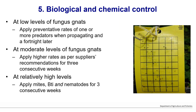At lower levels of fungus gnats with biological control, apply mites or Dalotia or both at propagation and a fortnight later to establish populations. At moderate levels, apply a higher rate weekly for consecutive weeks, adding BTi and nematode applications to drop populations down similar to insecticides, while avoiding negative effects on beneficial predators. You will get a feel for what rate you need for the level of population present.